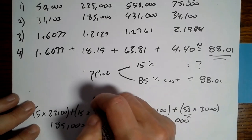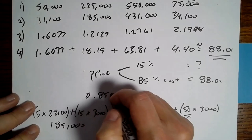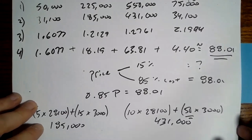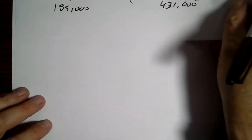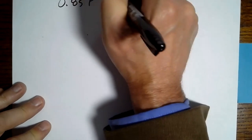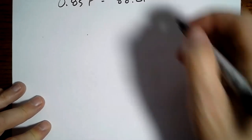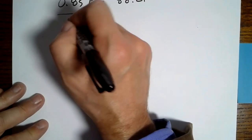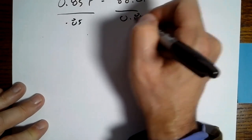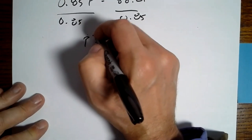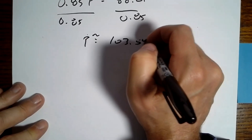So if 85% of the price equals $88.01, we write 0.85 × P = 88.01, then divide both sides by 0.85, and we get P ≈ $103.54.